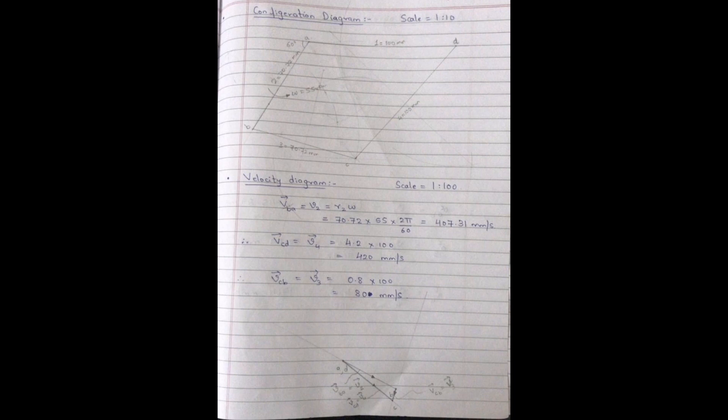After performing the synthesis of the mechanism using the Freudenstein equation, we get the link lengths, but we do not know the velocities and accelerations of the links. To find the velocity and accelerations, we use the velocity and accelerations diagrams. First we draw the configuration diagram with the input angle as 60 degrees as shown over here.